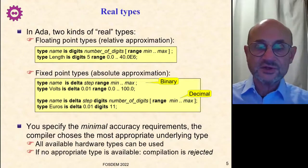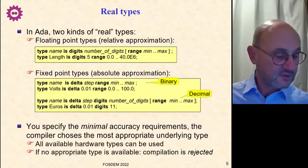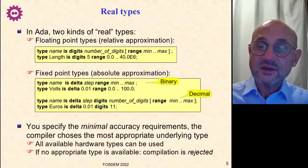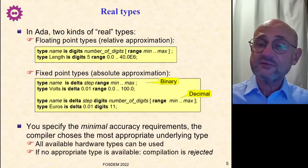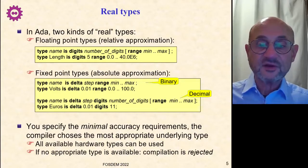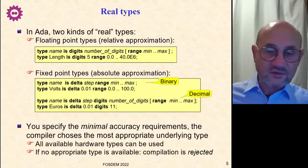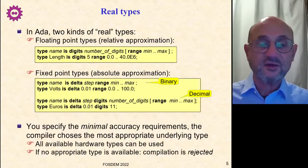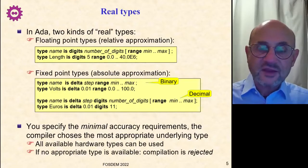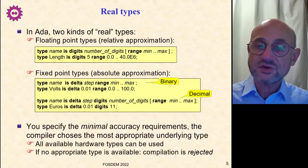And so the principle is that you specify the minimal accuracy that comes from your requirements. And then the compiler will choose among all available hardware types, the one that fits best your requirements. So all available hardware types can be used. And if the compiler does not find an appropriate type, then it will be rejected at compile time. If you need, say, 20 digits of accuracy, and your computer doesn't have 20 digits, then you'd better know that as soon as possible, because either you change your requirements, or you have to change your computer.